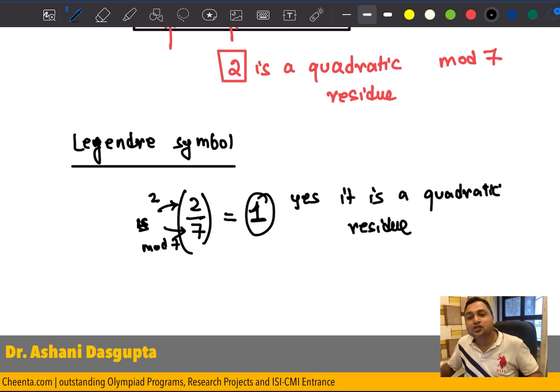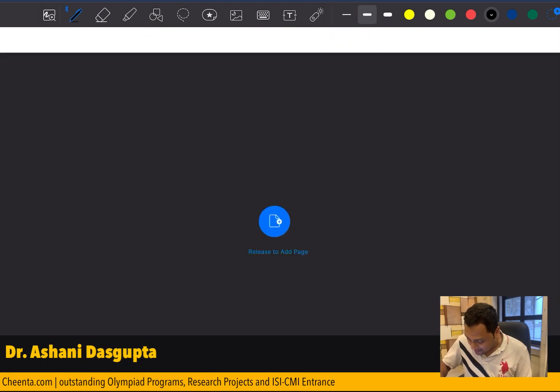So, indeed, 2 is a quadratic residue mod 7. Okay? All right. So, let's test out with some other numbers. Let's try with 5.